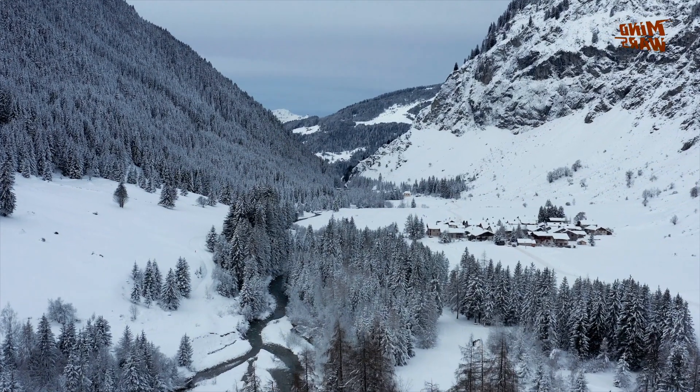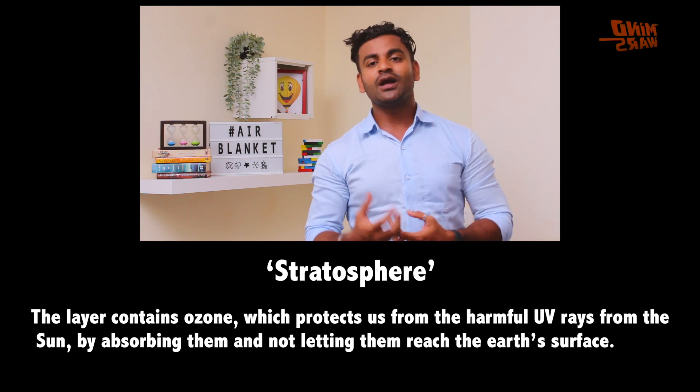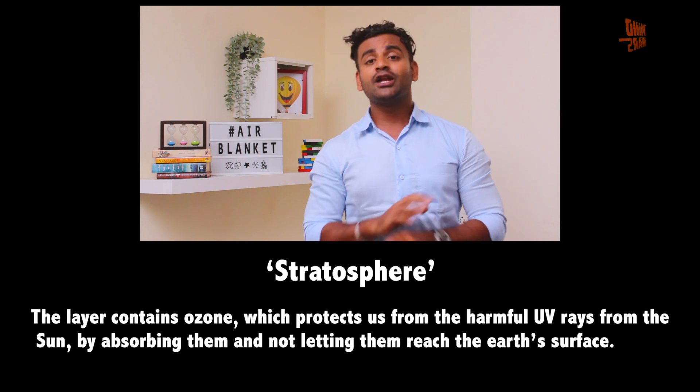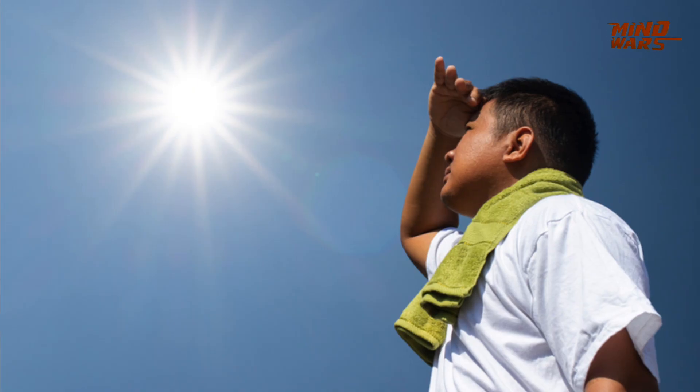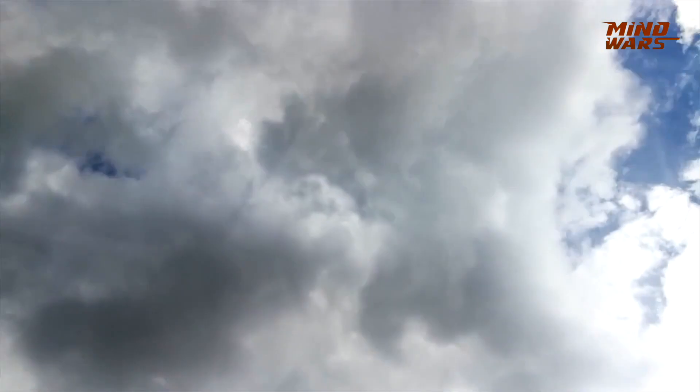The second layer of the atmosphere is the stratosphere, which is very important for us. This layer contains ozone, which protects us from harmful ultraviolet radiation from the Sun by absorbing it and not letting it reach the Earth's surface. This heats up the ozone layer and results in a temperature increase with altitude above the troposphere. Since all weather phenomena occur in the troposphere, the stratosphere is an ideal layer for aircraft — there's no turbulence from clouds, which remain in the troposphere below.